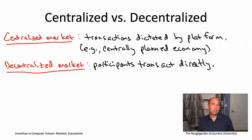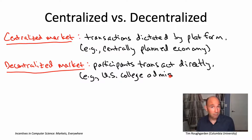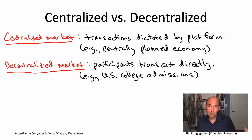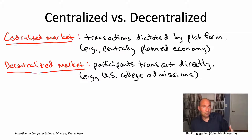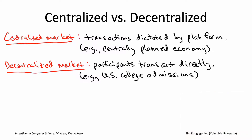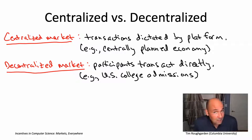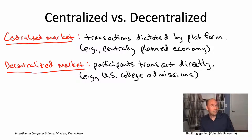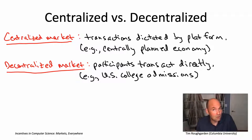One probably familiar example would be college admissions in the United States. That's completely decentralized. As an applicant, you can apply to whatever colleges you want — no one's telling you which colleges you can and can't apply to. Similarly, from the perspective of the colleges, they can accept any students that they want. It's worth noting that in a lot of countries other than the United States, college admissions is not decentralized.